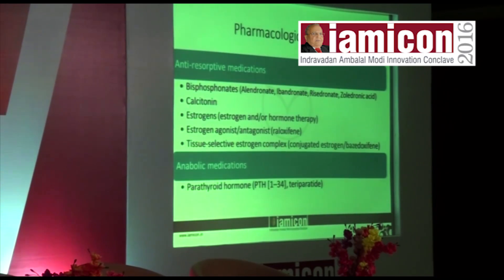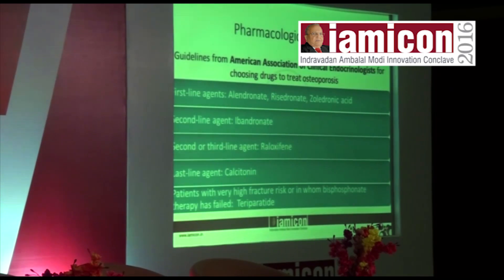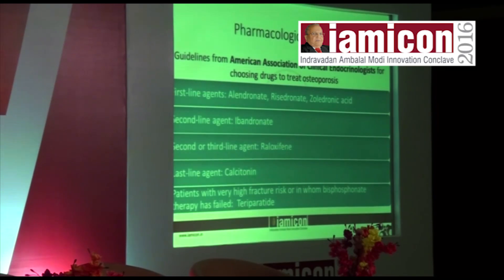Pharmacological therapies available include anti-resorptive medications: bisphosphonates (alendronate, ibandronate, risedronate, zoledronic acid), calcitonin, estrogens or hormone therapy, estrogen agonist/antagonist (raloxifene), tissue-selective estrogen complex (conjugated estrogen/bazedoxifene), and anabolic agents like parathyroid hormone — teriparatide, which is now very commonly used. Guidelines from the American Association of Clinical Endocrinologists: first-line agents are alendronate, risedronate, and zoledronic acid; second-line is ibandronate; third-line is raloxifene; last line is calcitonin. For patients with very high fracture risk or when bisphosphonate therapy has failed: teriparatide.